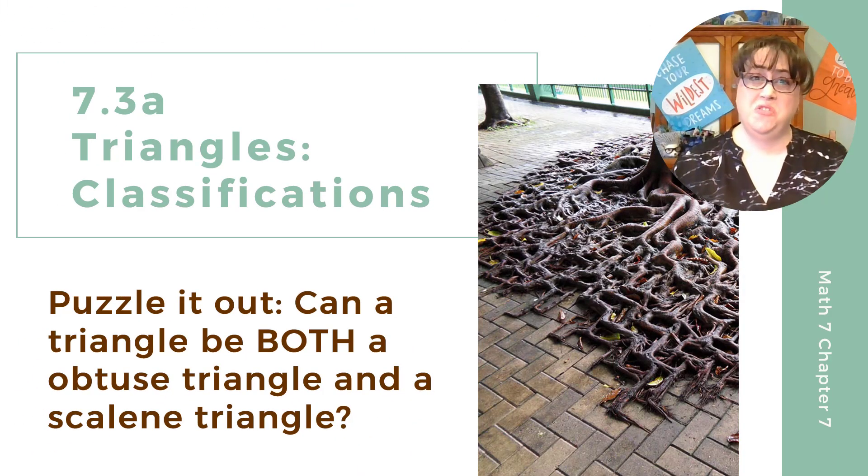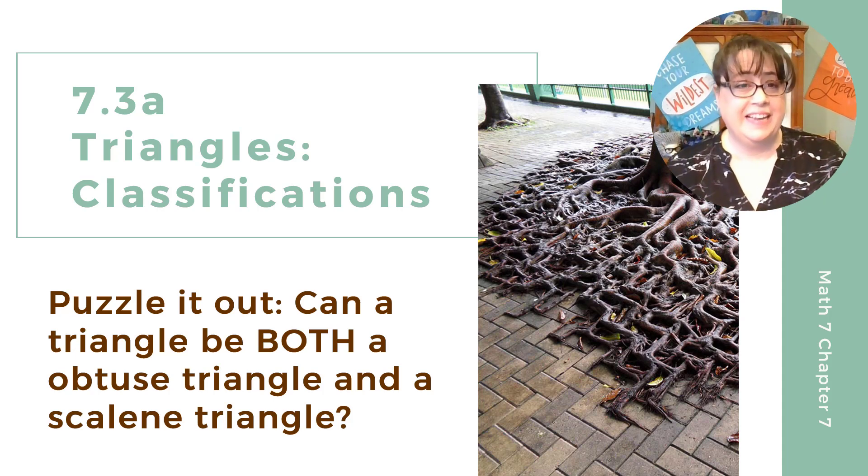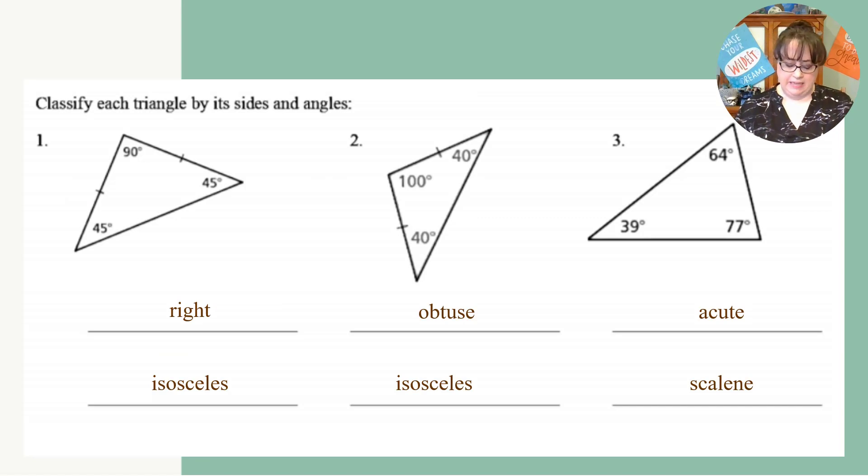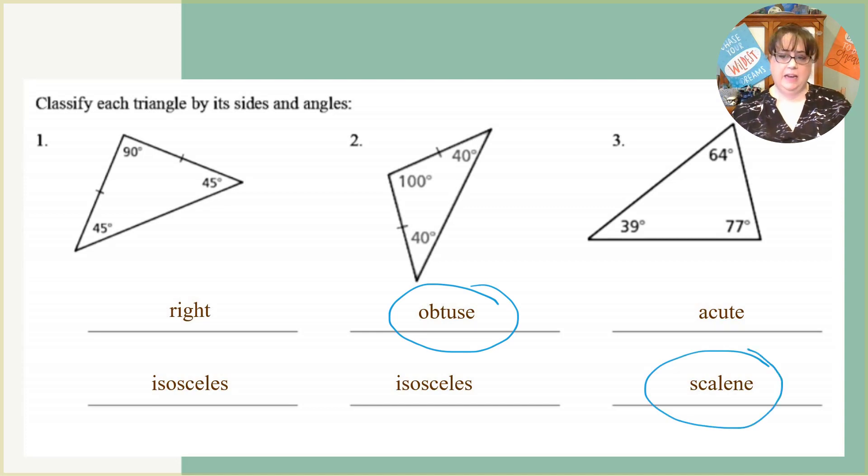I want to thank you so much for joining us in this very short lesson, and I want you to puzzle this out. Can a triangle be both an obtuse triangle and a scalene triangle at the same time? What do you think? In other words, I'm asking, can it have the qualities of being obtuse and scalene at the same time?